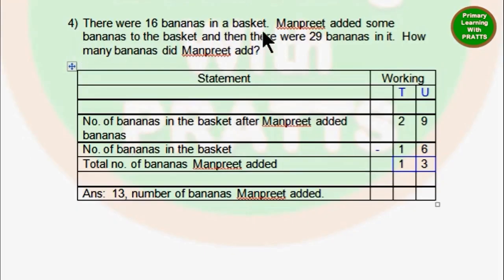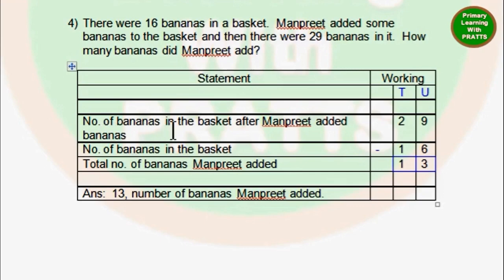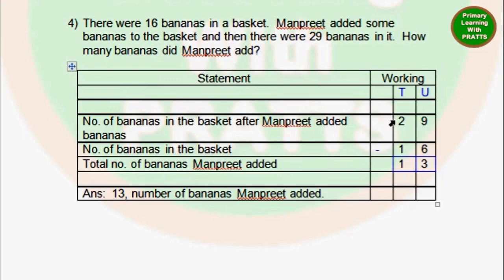Fourth sum. There were 16 bananas in a basket. Manfred added some bananas to the basket and then there were 29 bananas in it. How many bananas did Manfred add? Now they have twisted the word problem for us — first they gave us the total bananas after adding. So our first statement will be: number of bananas in the basket after Manfred added the bananas, which is 29. Our next statement: number of bananas in the basket originally, which was 16. Third statement: total number of bananas Manfred added. 9 minus 6 is 3. 2 minus 1 is 1. So the answer is 13. Number of bananas Manfred added.